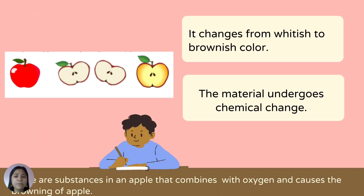You can explore chemical change by observing an apple. Cut it into two and expose it to oxygen in the air. What did you observe in its color after cutting the apple and exposing it to oxygen after five minutes? If you observed that it changes from whitish to brownish color, then it undergoes chemical change. The oxygen introduced on the surface of the apple releases free radicals in an oxidation process, turning the apple brown. There are substances in an apple that combine with oxygen and cause the browning of the apple.